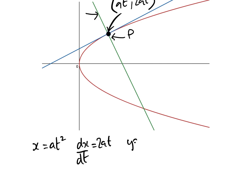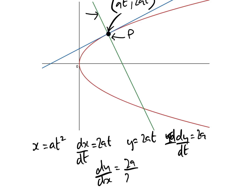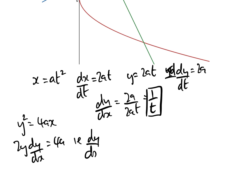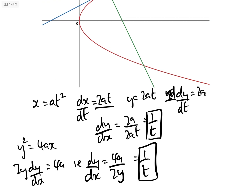And y = 2at, so dy/dt = 2a. Therefore dy/dx = dy/dt over dx/dt = 2a over 2at = 1/t. Alternatively, using implicit differentiation on y² = 4ax: 2y dy/dx = 4a, so dy/dx = 4a/2y = 1/t since y = 2at. Either way we get 1/t.